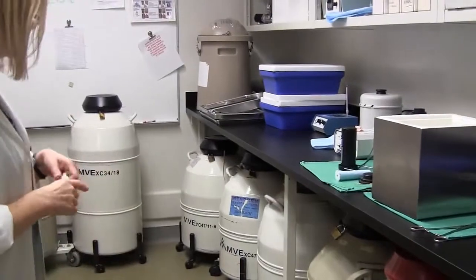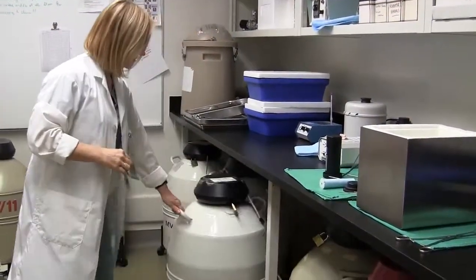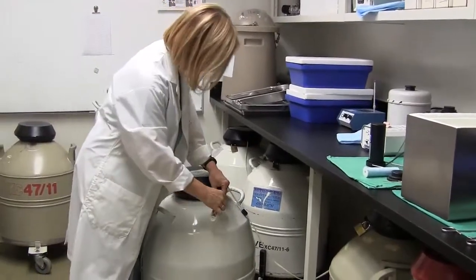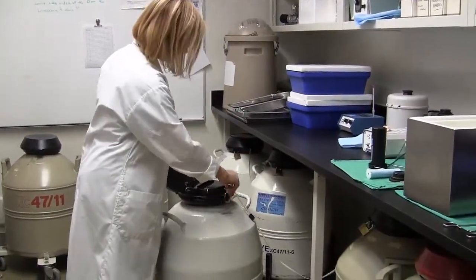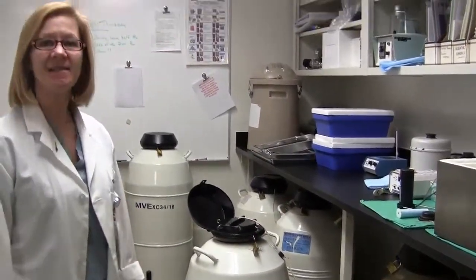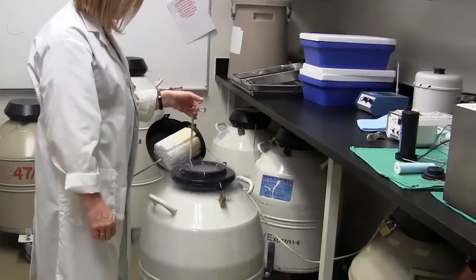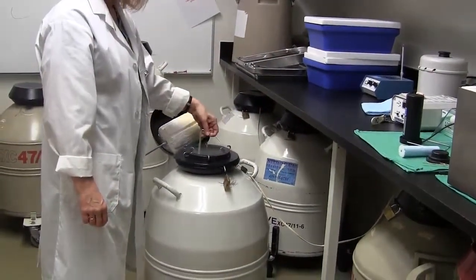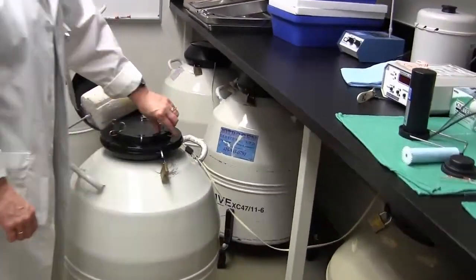Each of these tanks has six canisters. Each canister can hold 30 canes, and each cane can hold 10 embryos. So that's 10 times 30 times 6. So 300 times 6. That's what, 1800? Yeah.